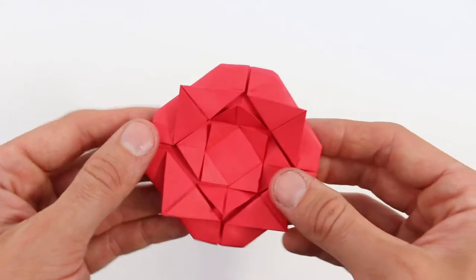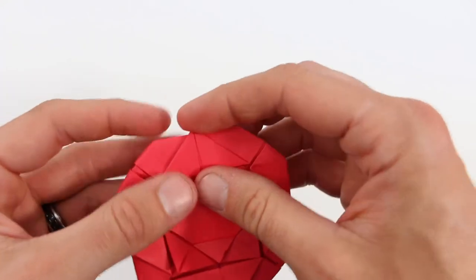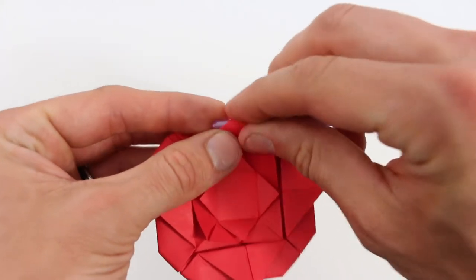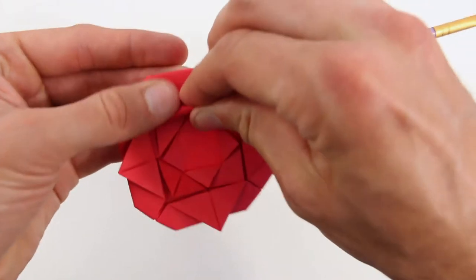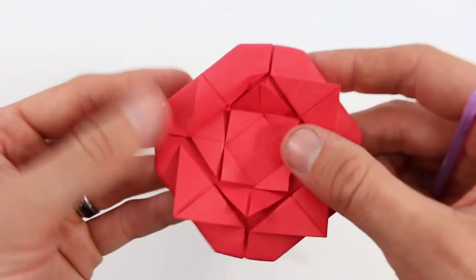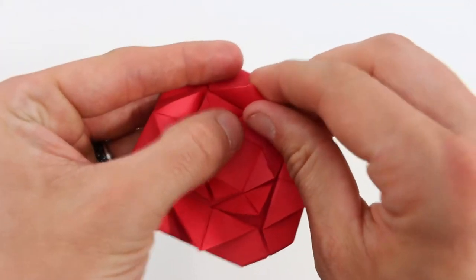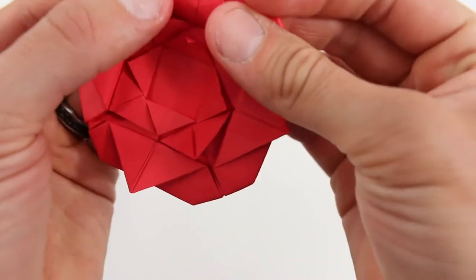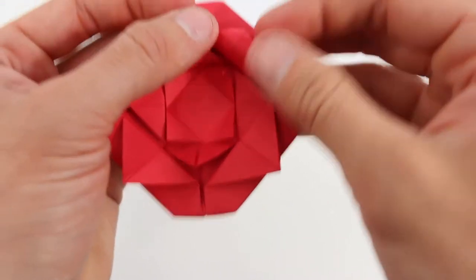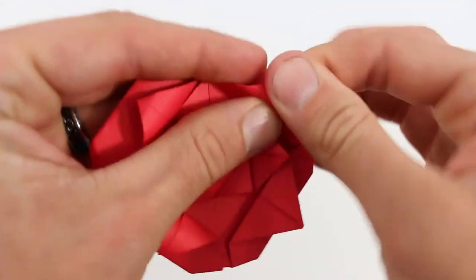So now we've folded all the petals. Now we just need to round them a little bit to make it a little more lifelike. I usually do this with my fingers. You could also take the end of a paintbrush or something and roll it around that like this. But I usually just use my fingers to do it.